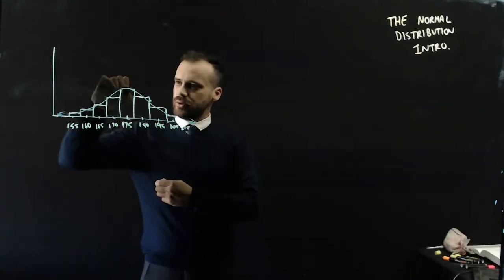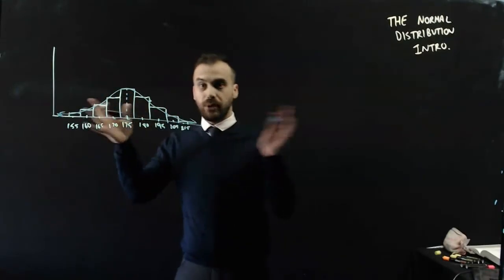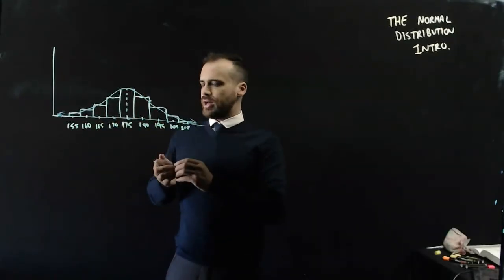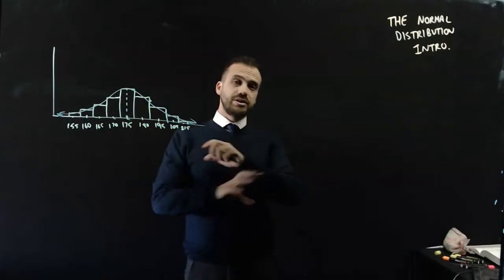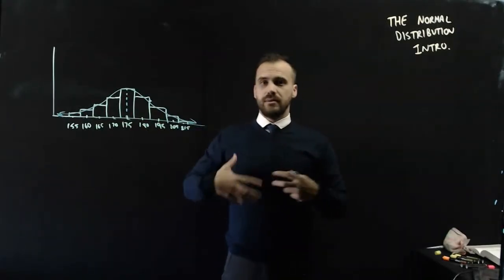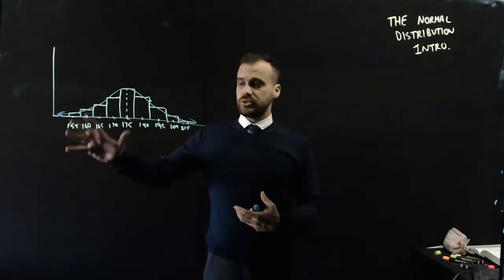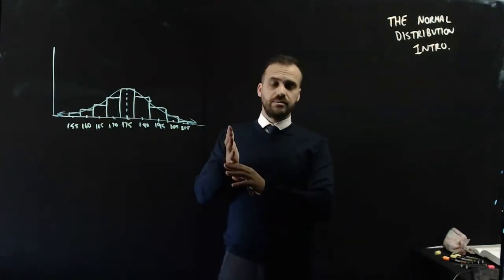Now, the mean will be this point here, which on my diagram is 175. Okay, so normal distributions, they happen everywhere. People's heights, people's weights, people's IQs are normally distributed, around 100 is the mean.